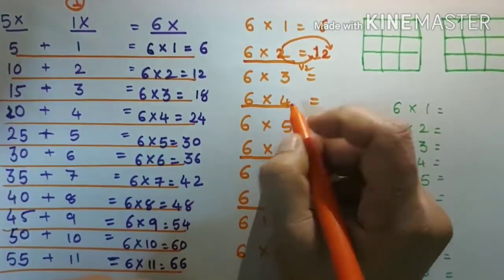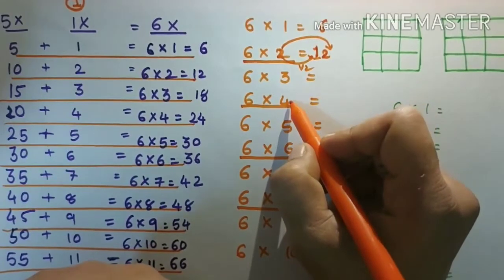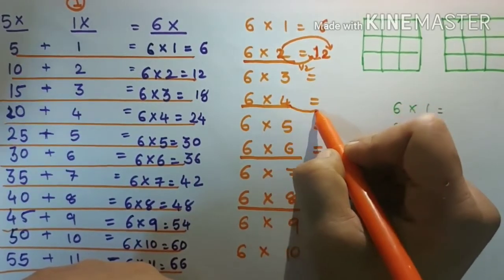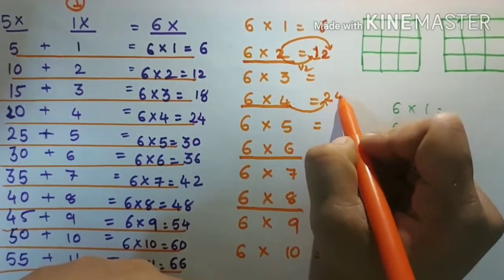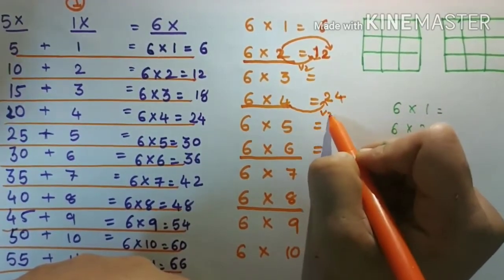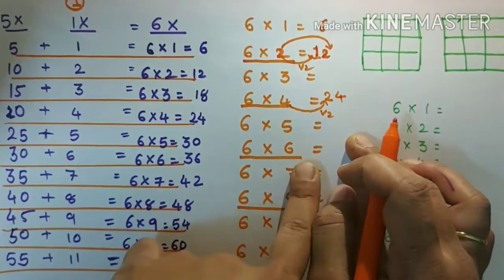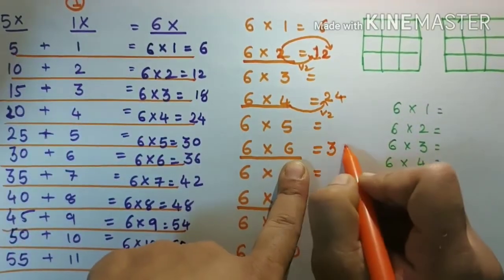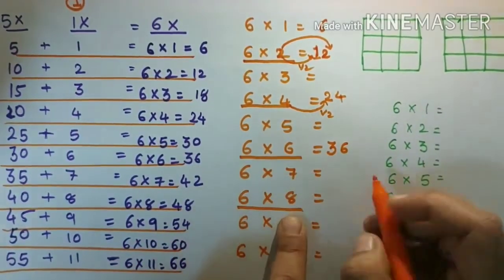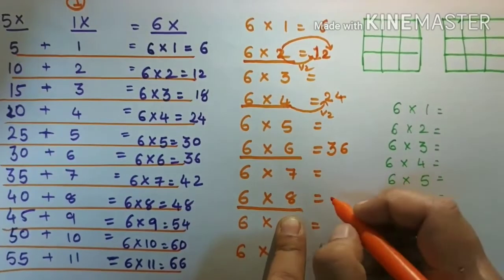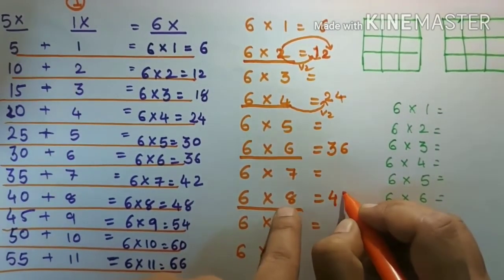Six fours: half of four is two, and write down four as it is, so the answer is twenty-four. Six fives: skip this one. Six sixes: half of six is three, write down six as it is, so the answer is thirty-six. Six eights: half of eight is four, write down eight as it is, so the answer is forty-eight.